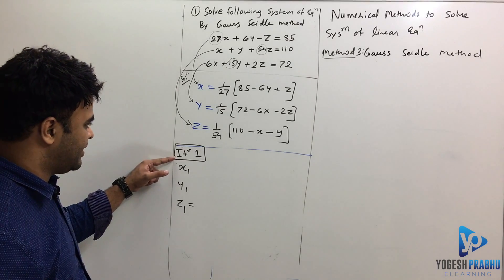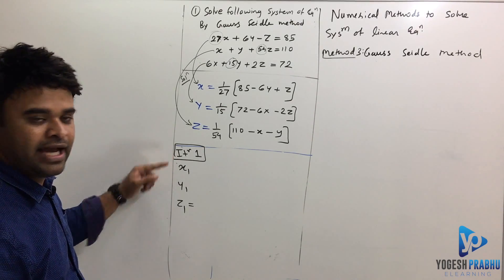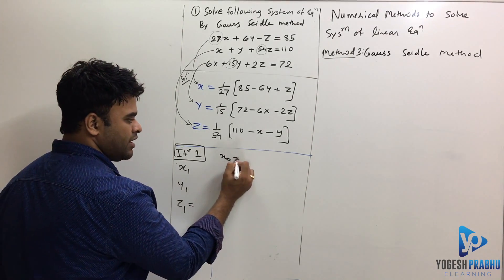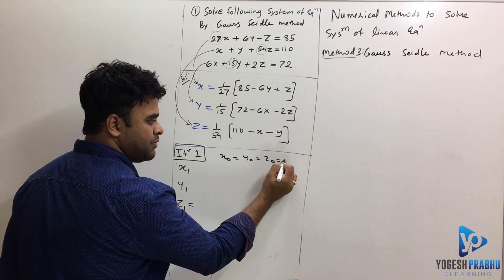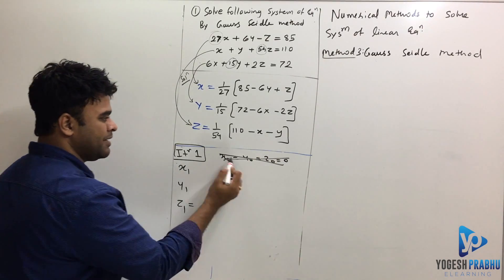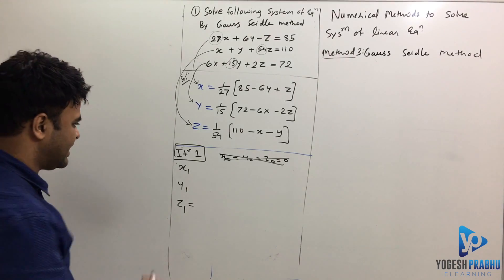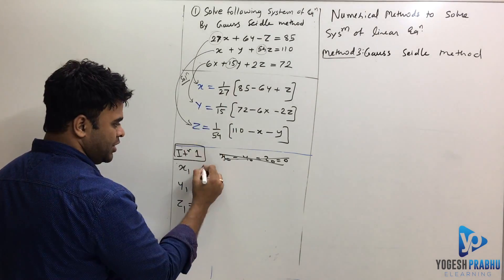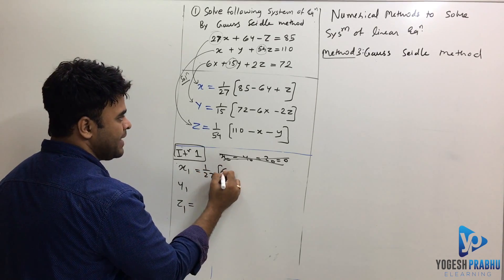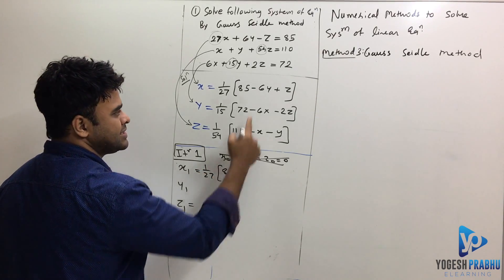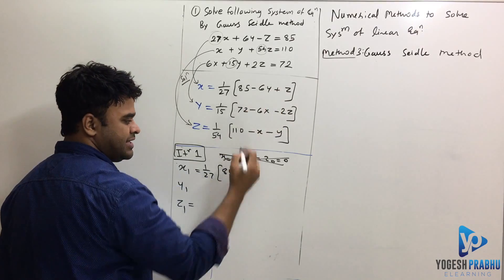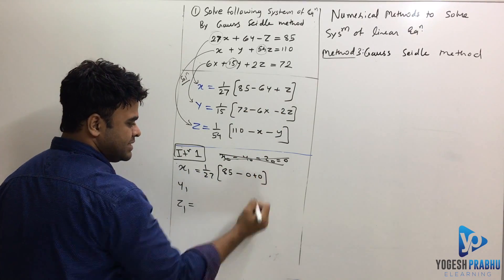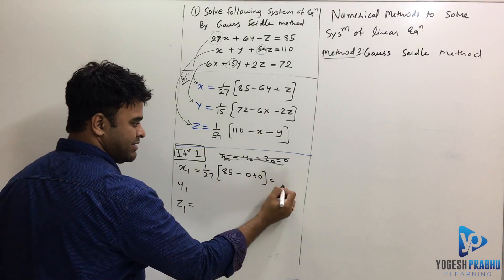Now for the first iteration, we used to do x0, y0, z0 is equal to 0 for Jacobi's method, but not for Gauss-Seidel method. We will find x1. For x1, let's just see what we can do. For here you will substitute 1 upon 27 and this is 85 minus, now of course you don't have values of y and z to make them 0s, so I will make this 0. So you get 85 upon 27, whatever that number is.